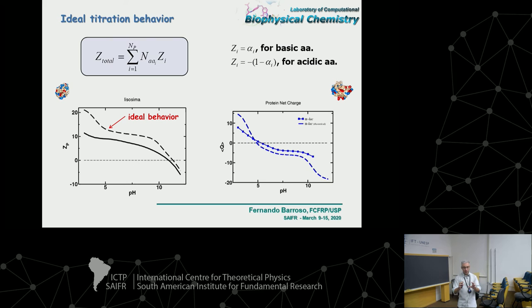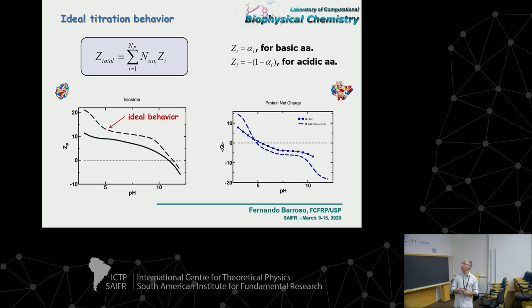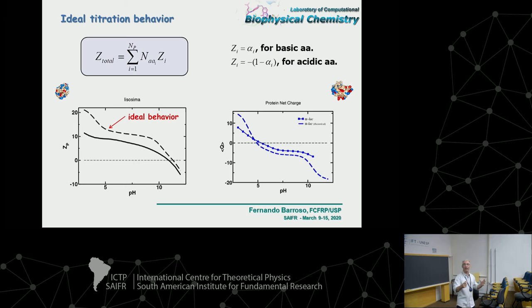If you add up the contributions from all amino acids, you can make a titration plot for the whole protein — taking contributions as described and summing over all titratable groups. Here I show an example for two proteins: lysozyme and alpha-lactalbumin, which share a common evolutionary ancestor. You can see the ideal behavior compared to the result that accounts for neighborhood effects using the proper mathematics including the 3D structure. The isoelectric point (pI) turns out to be very similar between the two approaches.